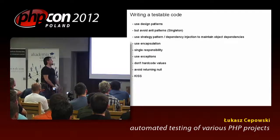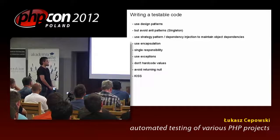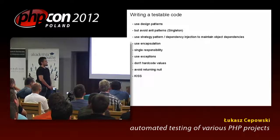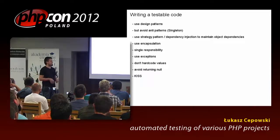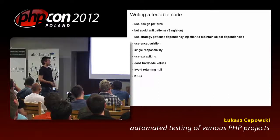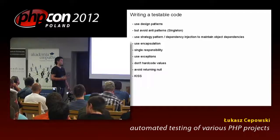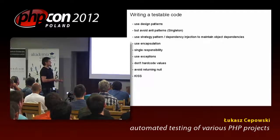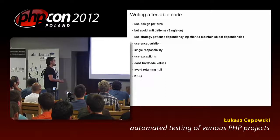A little about writing testable code. First of all, please use design patterns — it's a simple rule but it works. Also avoid anti-patterns, especially singleton. Use the strategy pattern for dependency injection to maintain object dependencies. Basically if you have a model that requires functionality embedded in another model, you can have a member of a class which is another object — dependency injection adapts the workflow of an object based on adapters. Use encapsulation.